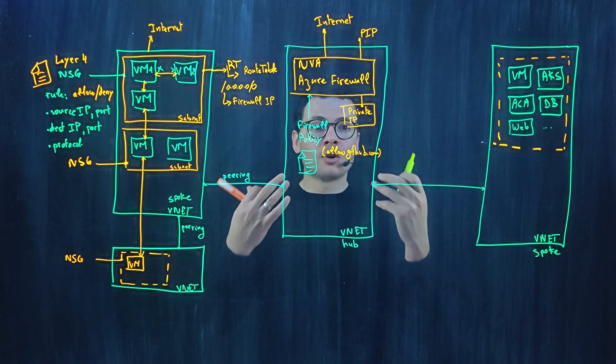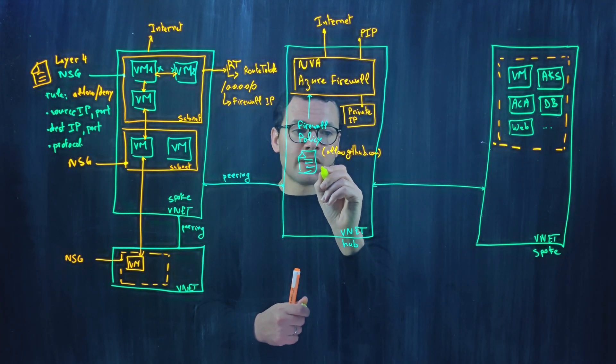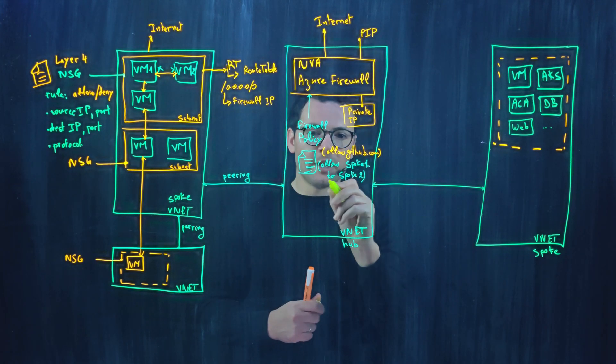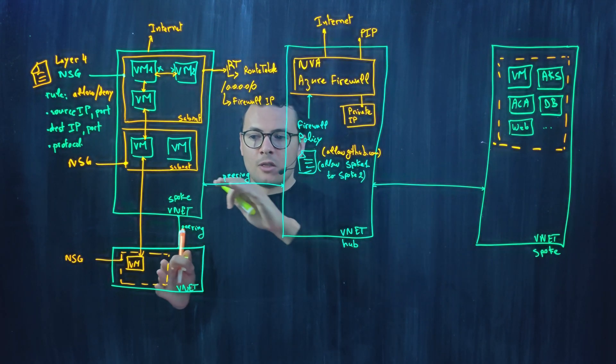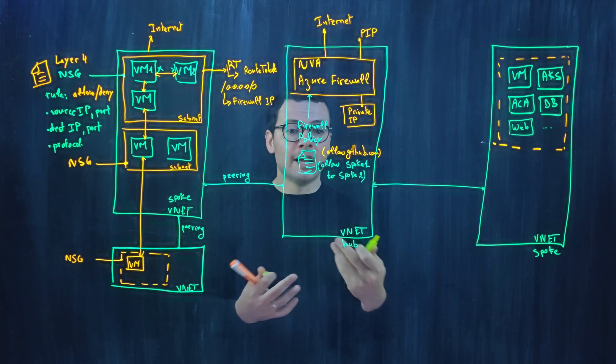And again, we can control and filter that traffic. So we can define another firewall policy that says, for example, allow spoke one to spoke two. And this time, it will rely on the CIDR range IP address of spoke two and spoke one, and then it can allow it or deny it.